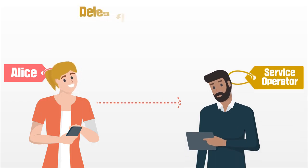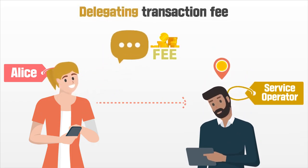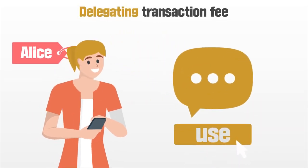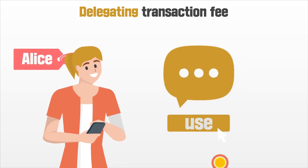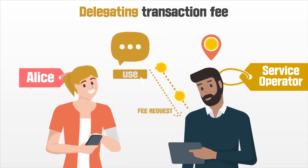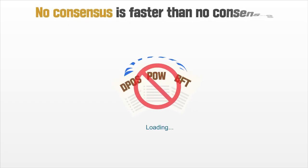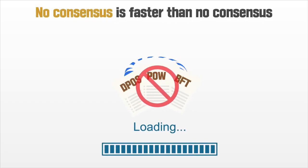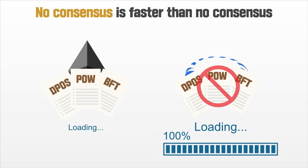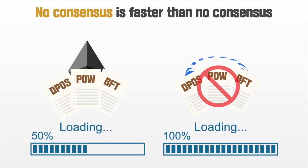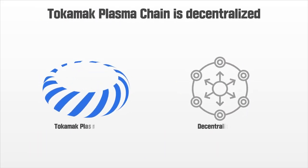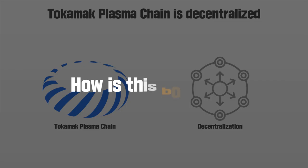Second, delegating transaction fees is possible — if the service provider bears the fee, users can use the blockchain service without any fee. Third, there is no need for a consensus algorithm on the chain itself, so you can run decentralized applications with fast performance. No consensus is the fastest consensus you can get, and yet the Tokamak plasma chain is decentralized.